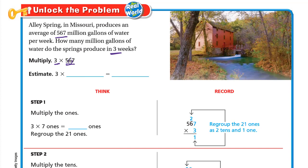3 times 567 — we'll round it to the nearest hundred. To the right of the 5 we have 6, which is a strong digit, so 500 rounds up to 600. So 3 times 600: we do 3 times 6 which is 18, and write the two zeros, giving us 1800. Now let's multiply 3 by 567.